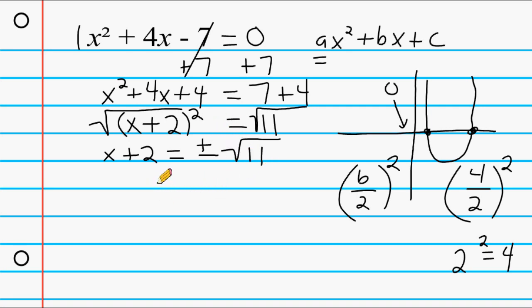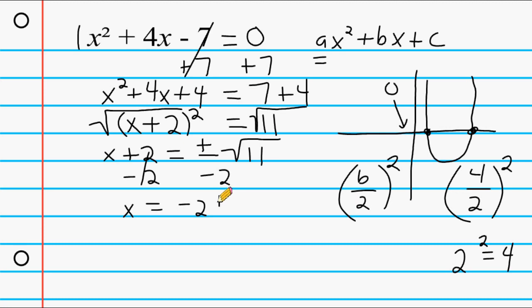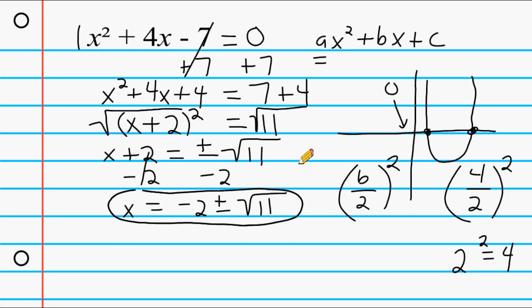Now we isolate x by moving positive 2 to the right-hand side. We subtract 2 from both sides, giving us x = −2 ± √11. The square root of 11 is already in simplest radical form — there are no perfect squares to pull out — so we can leave our answer in this form. You can use a calculator to get a decimal approximation, but it is perfectly acceptable to leave it as x = −2 ± √11.